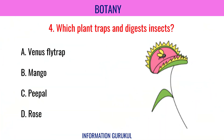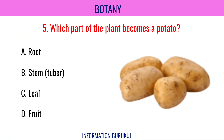Which plant traps and digests insects? Venus flytrap. Which part of the plant becomes a potato? Stem tuber.